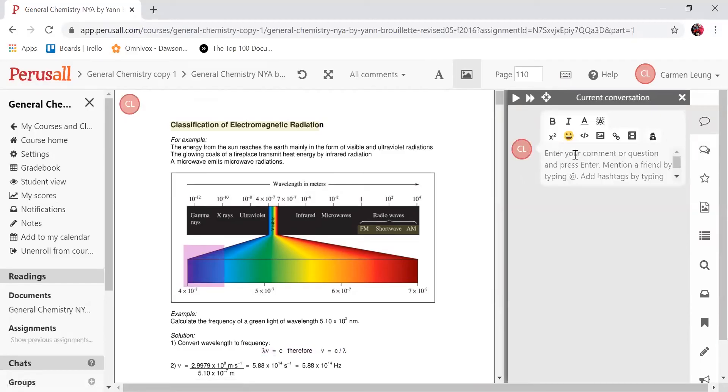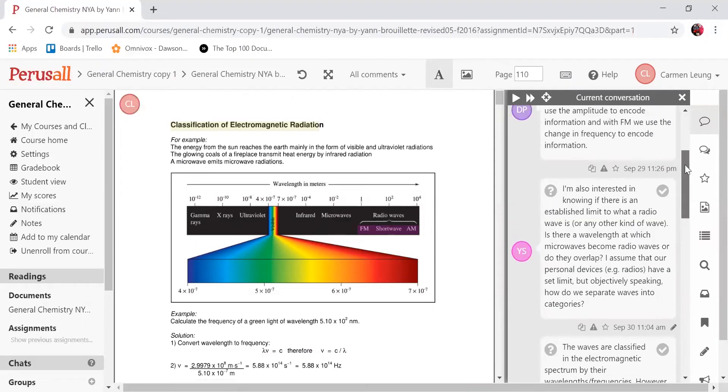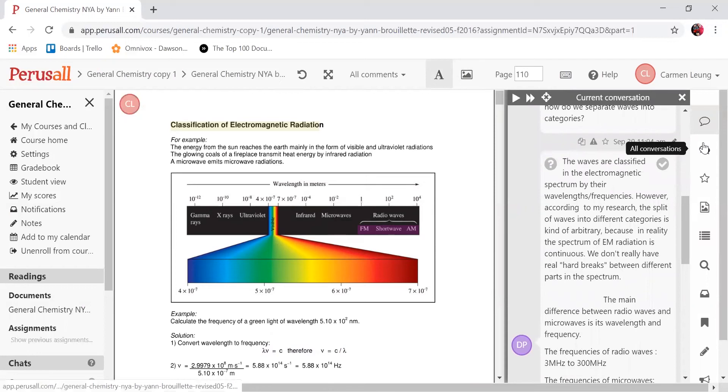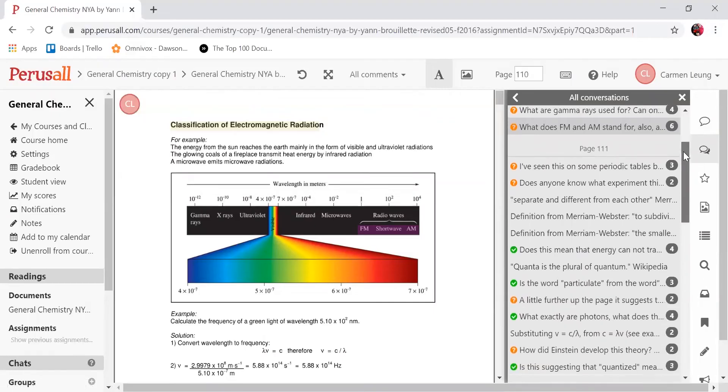Any parts that are highlighted in yellow means that there are annotations for that area. If I click on one, you can see that there's a conversation being held between my students. If I click on this icon here, I'll get to see where all of the conversations are in this reading assignment.